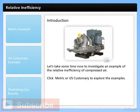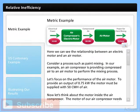Let's investigate an example of the relative inefficiency of compressed air. Here we can see the relationship between an electric motor and an air motor. Consider a process such as paint mixing. In our example, an air compressor is providing compressed air to an air motor to perform the mixing process. To provide an output of 0.75 kW, the motor must be supplied with 50 CMH of air.